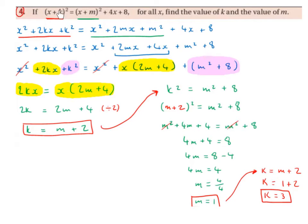We need to find the value of k and the value of m. The first thing we're going to do is multiply out the brackets. So x plus k squared becomes x plus k times x plus k, which gives us x squared plus 2kx plus k squared. Then we multiply out x plus m squared, which is x plus m times x plus m, giving us x squared plus 2mx plus m squared.